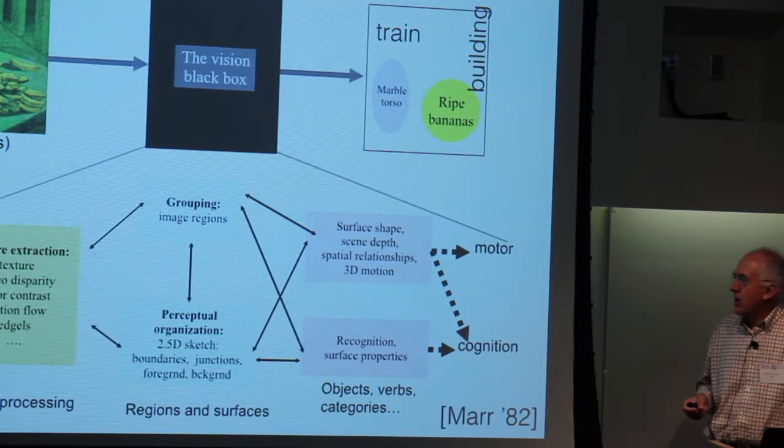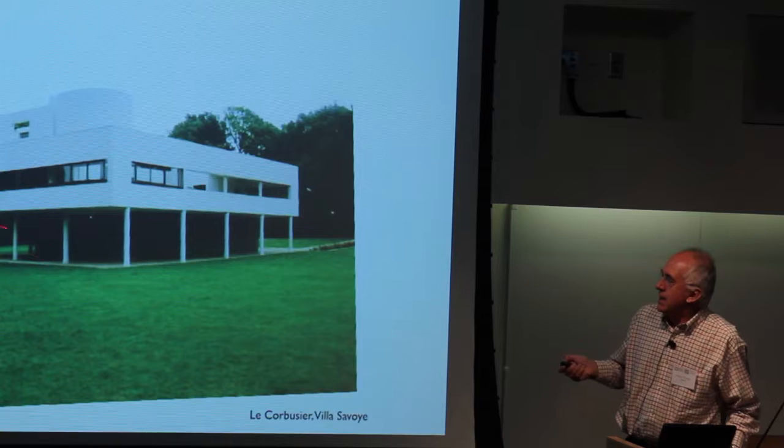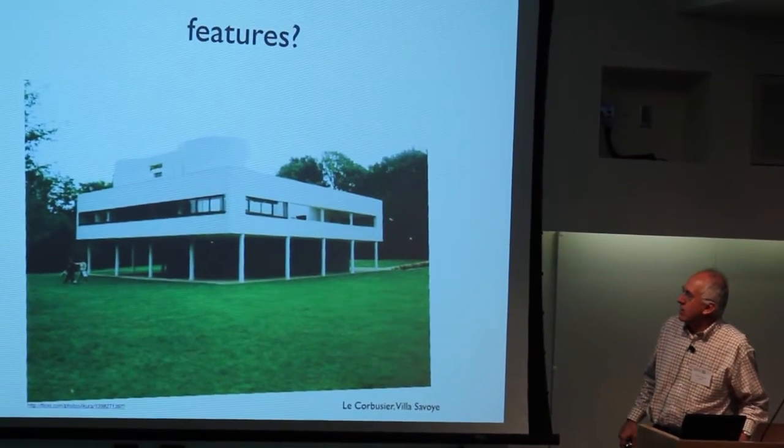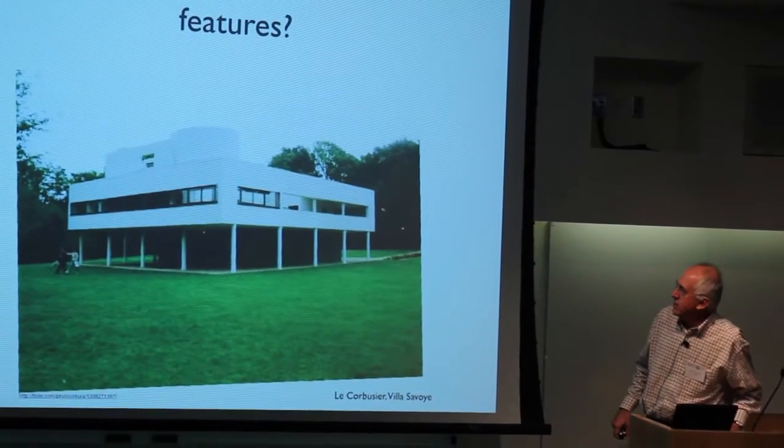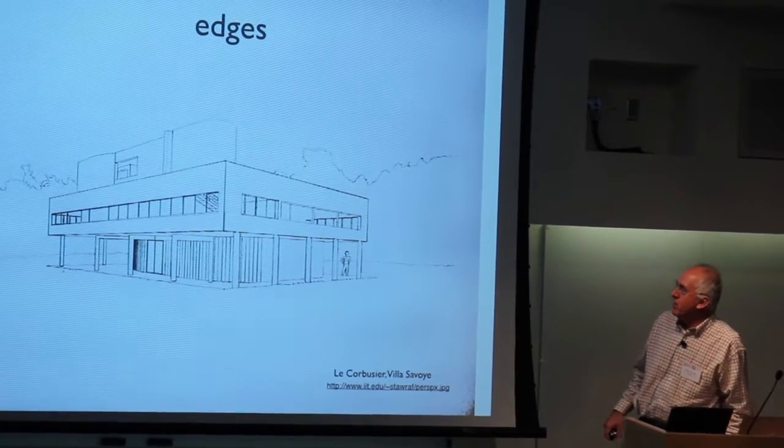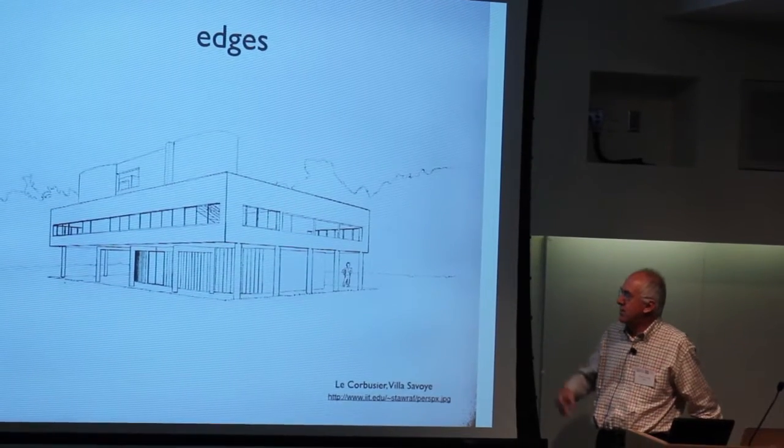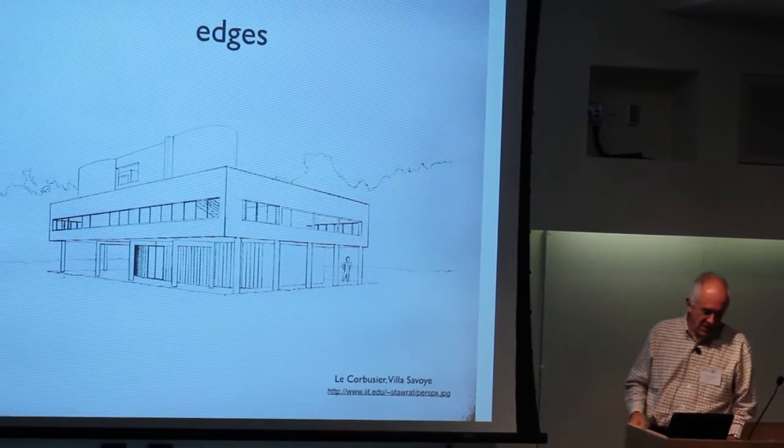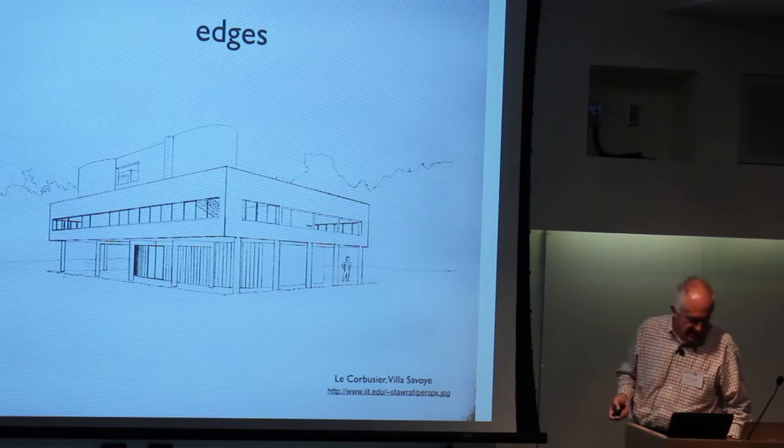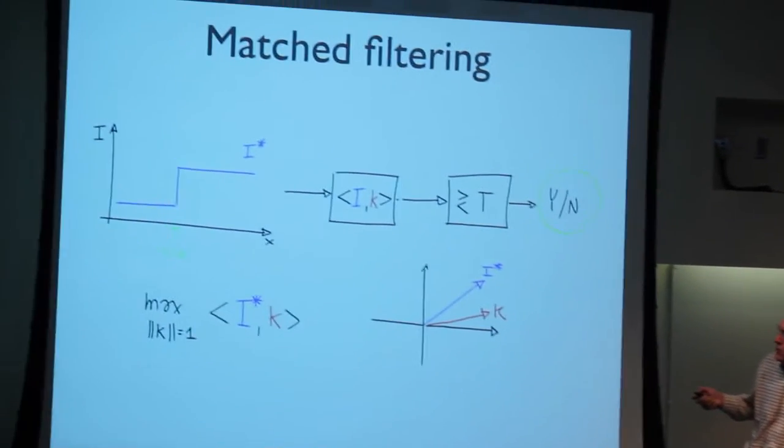To give an example, something people had noticed early on, David Marr, etc., is that one aspect of images that certainly has to be accounted for is edges. Those are places that are very important because surfaces change there, so edges are informative for recognition, informative for shape. Once you've made this step, you realize that across edges there are changes in brightness, and so you can start reasoning mathematically.